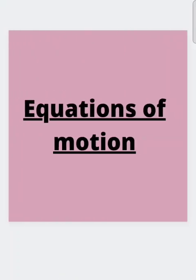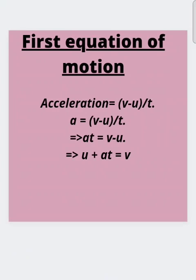There are three equations of motion. The first equation of motion: acceleration is equal to (v - u) / t, where v is final velocity, u is initial velocity, and t is time. Rearranging, at = v - u, meaning acceleration into time equals final velocity minus initial velocity. Finally, the first equation of motion is: v = u + at.